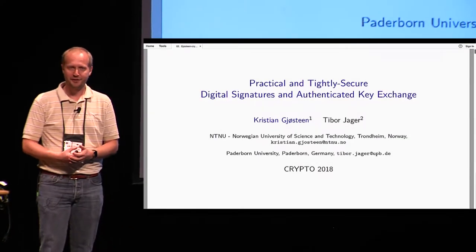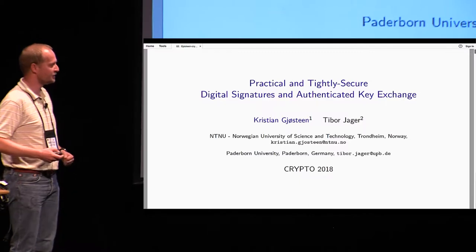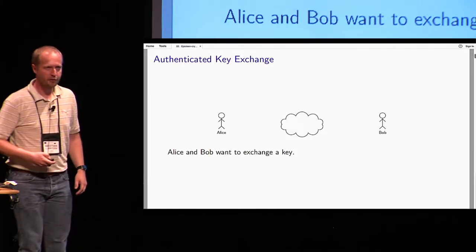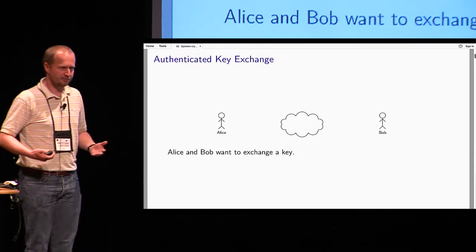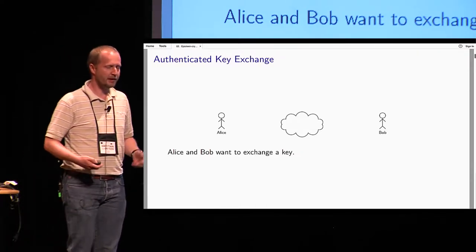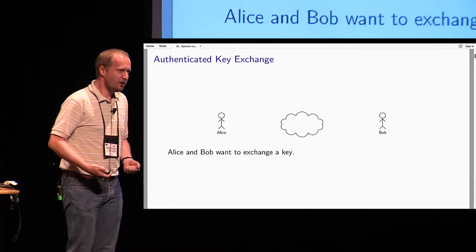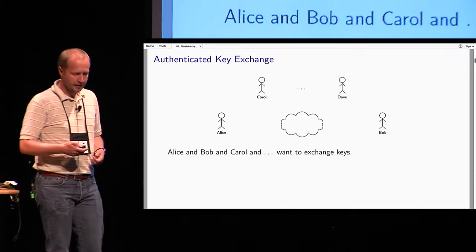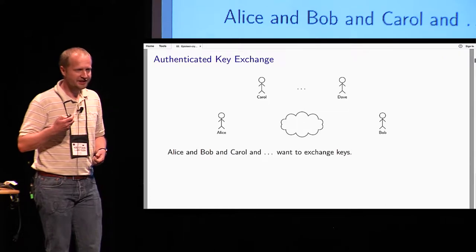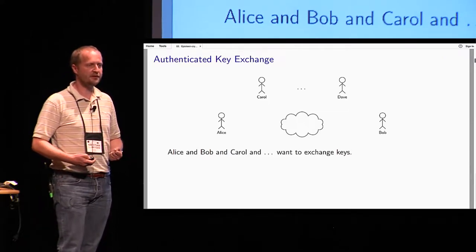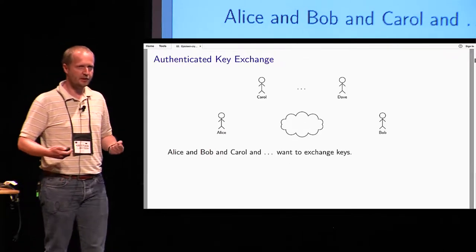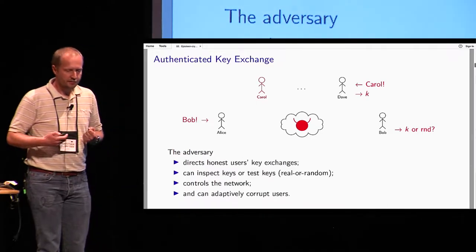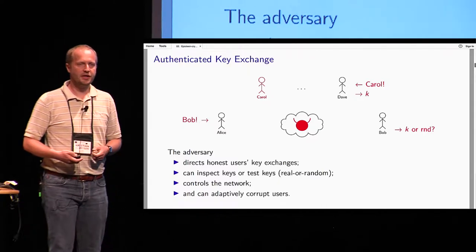I'm going to talk about the interactive case. Where we almost all start our teaching of the crypto course is Alice and Bob — they want to exchange a key. What we often don't say in the basic crypto course is that it's not just Alice and Bob out there. There are lots of people, and this is a problem because we have lots of security proofs that work well for two people, but when you mix in lots of people we get into trouble.